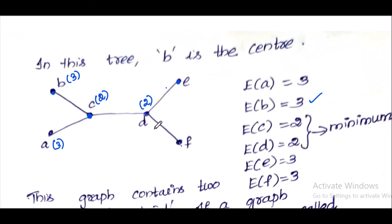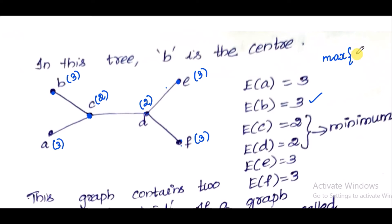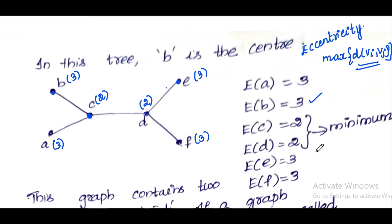For vertex E: the highest distance is to A — 1, 2, 3 — so E's eccentricity is 3, and F's eccentricity is also 3. Looking at all eccentricities: C and D have minimum eccentricity of 2. The vertex with minimum eccentricity in the graph is the center.